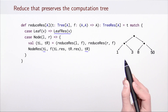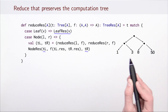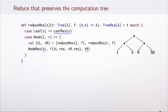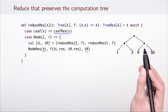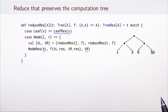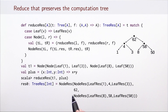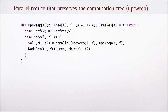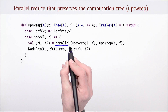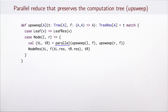For a balanced tree storing four integers 1, 3, 8, and 50, if we compute reduce_res with addition as the operation, we obtain a new tree with the corresponding sums. The resulting tree has the same shape as the original, with these additional values. The root of the overall tree gives the value of reduce on our initial collection. To do this computation in parallel, we just insert the parallel keyword in front of the two recursive invocations. The resulting function we call upsweep, suggesting the bottom-up computation to obtain the tree of results.